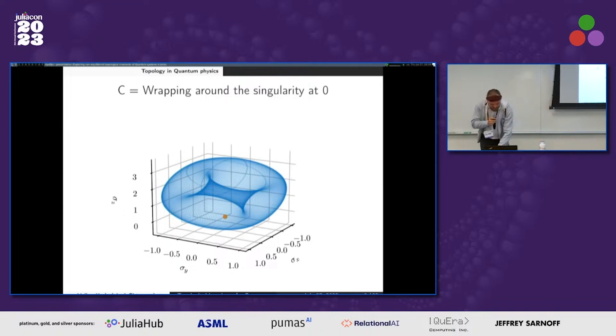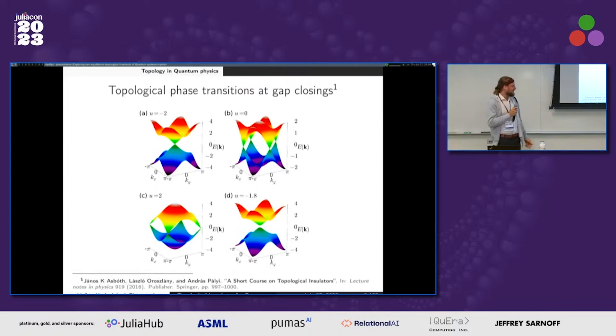But for more interesting examples and models, this is not just the point. And you see that the topological phase transition happens exactly at the point where the gap closes.